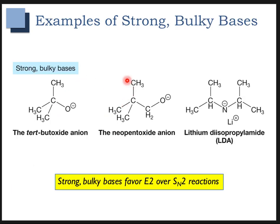Here are some more examples. We already talked about t-butoxide. This is neopentoxide — it technically has a CH2 here, but there are enough methyl groups to make it bulky. LDA has a negative charge on nitrogen with two isopropyl groups — it's also very bulky. You can just look at the structures of the bases, and if they look particularly bulky, they're probably going to be more basic and less nucleophilic.